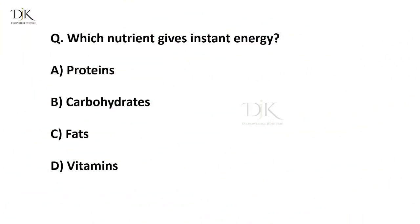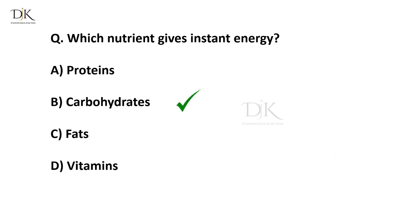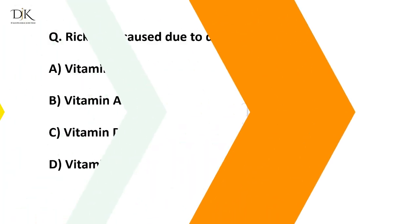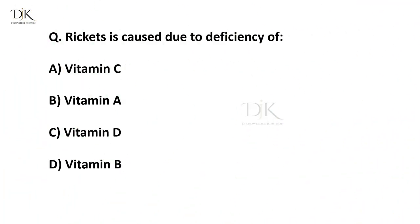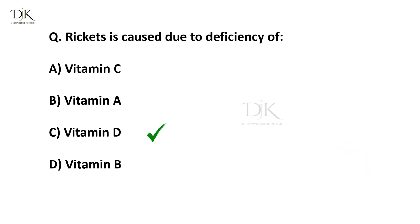Which nutrient gives instant energy? Right answer is carbohydrates. Rickets is caused due to deficiency of... Right answer is vitamin D.